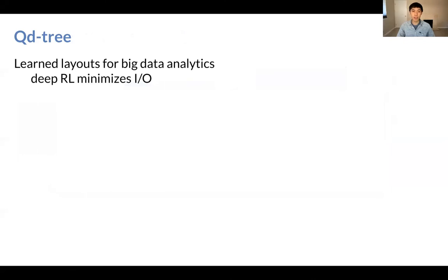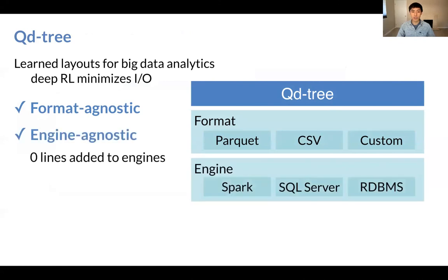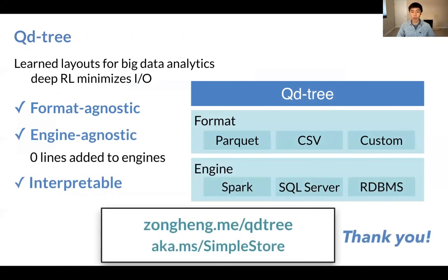To summarize, I have presented QD-trees, which are learned data layouts for big data analytics. We have shown how to use deep reinforcement learning to minimize the IO cost of the layouts. QD-trees have the following properties: they can run on any formats, any engines, and they are highly interpretable. For more details in our paper, please check out these links. Thanks. I look forward to conversations during the conference.